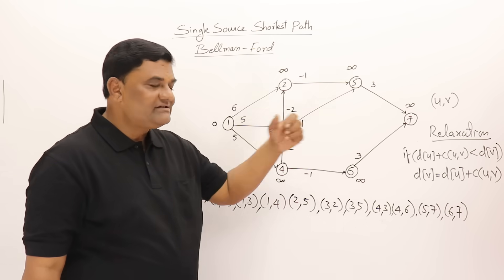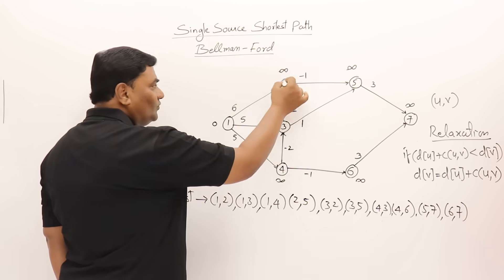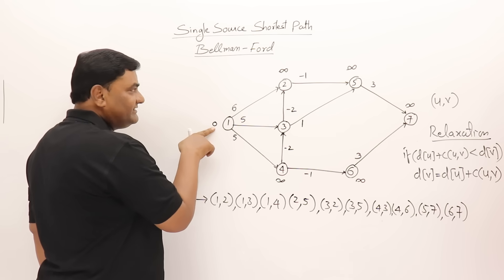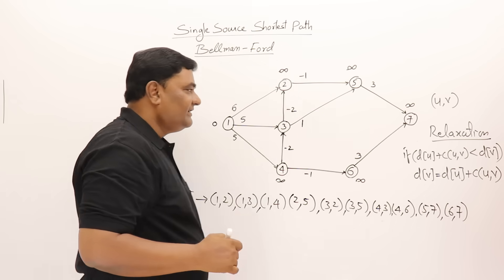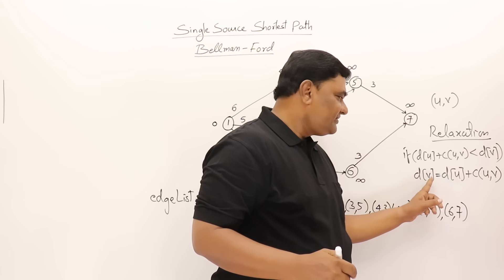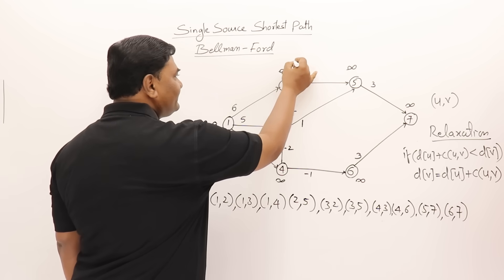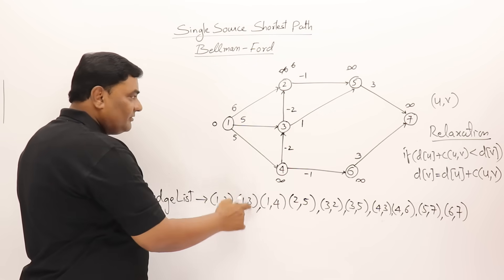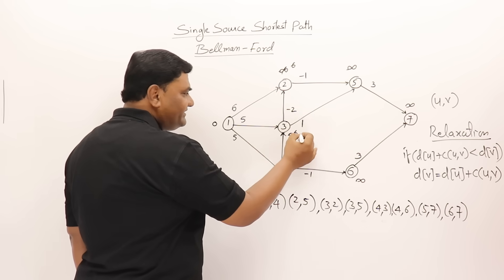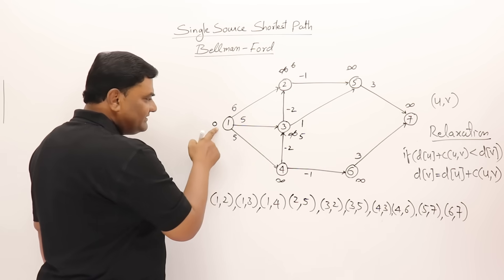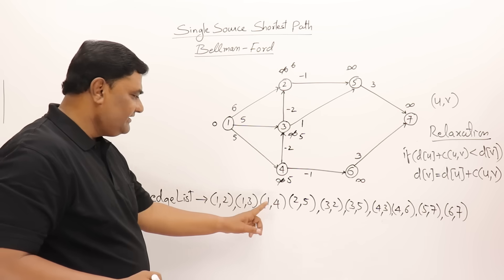Now start relaxing the edges. First edge (1,2): distance of vertex 1 is zero, distance of vertex 2 is infinity. Zero plus six is less than infinity, so change vertex 2's distance to six. Next, edge (1,3): zero plus five is less than infinity, so change vertex 3's distance to five. That completes the first three edges.